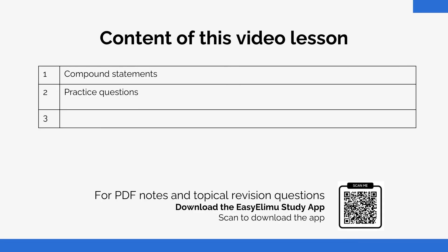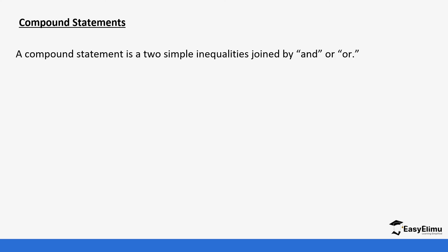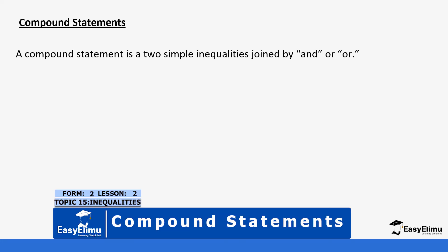In the previous lesson we looked at simple statements with only one condition, but now we are going to look at compound statements — what they are and how we represent them on the number line. A compound statement is two simple inequalities joined by 'and' or 'or'.